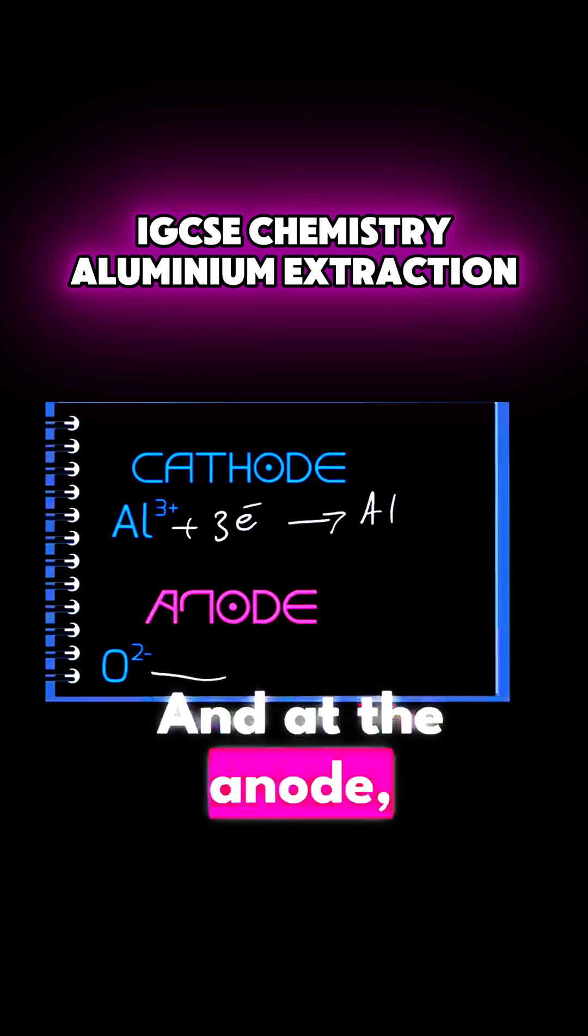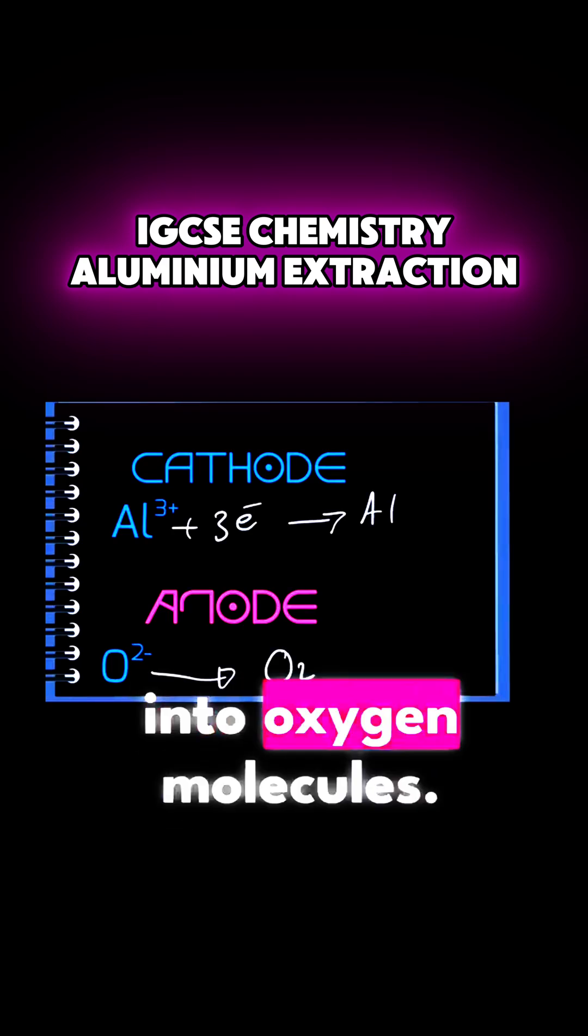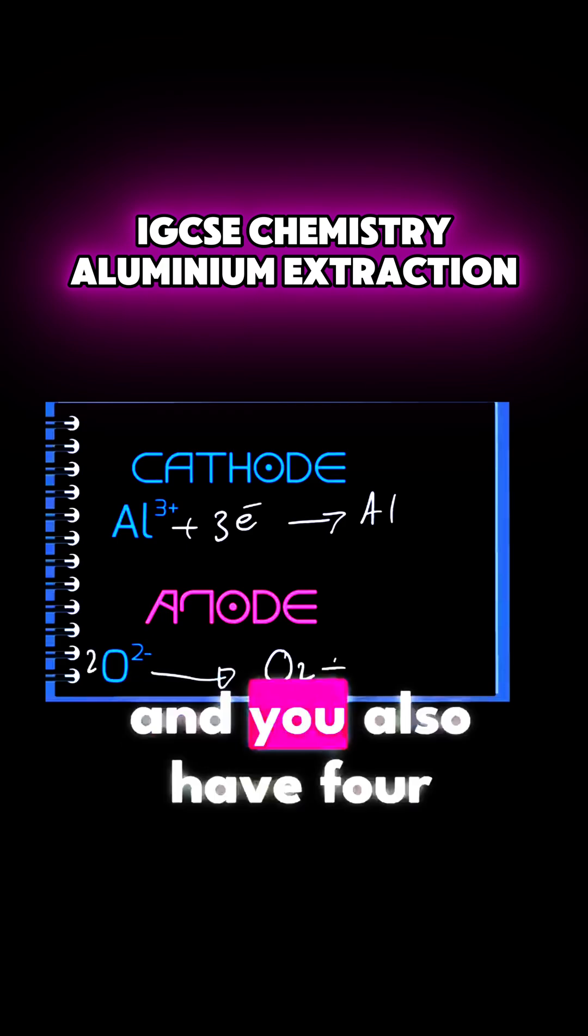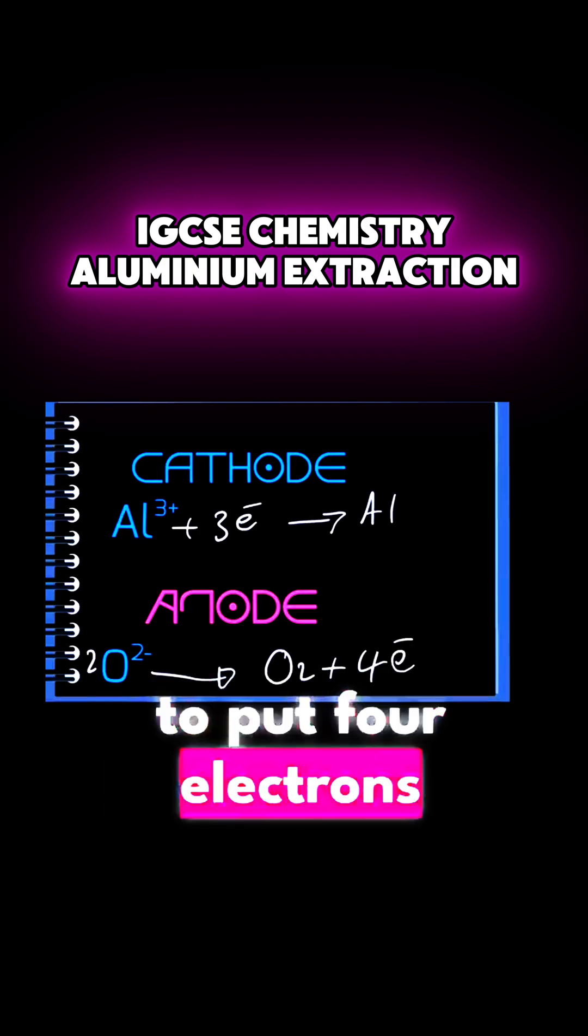And at the anode, you'll notice that oxide ions are getting oxidized into oxygen molecules. You need to balance the equation, put there two on the left-hand side. And you also have four negative charges there on the left, so you're going to have to put four electrons there on the right.